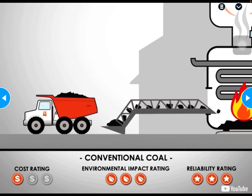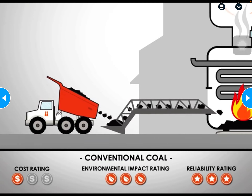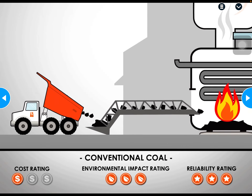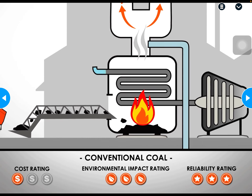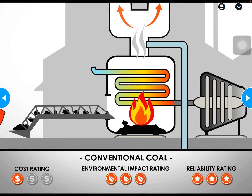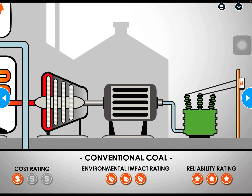In a thermal power station, like the Boundary Dam power station near Estevan, coal is burned in a boiler to convert water to steam. The steam goes into a turbine which turns a shaft. This shaft is connected to a generator that makes power as it turns.